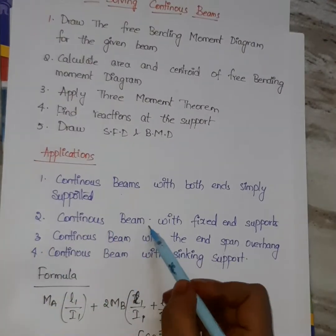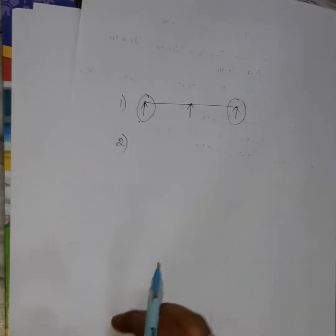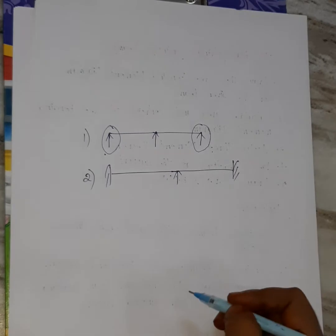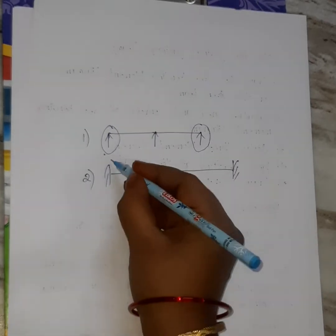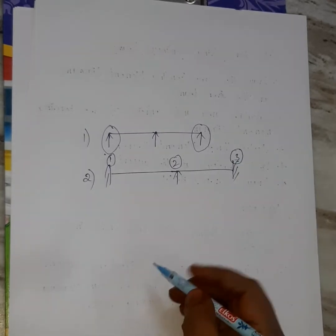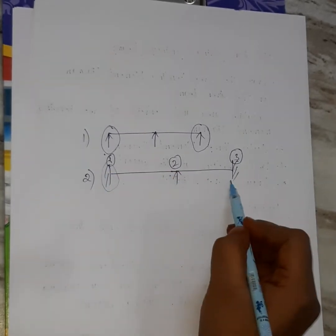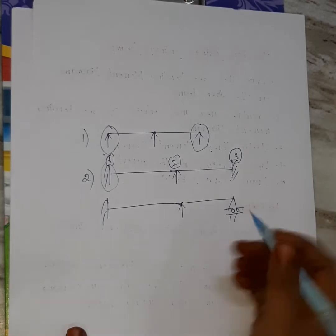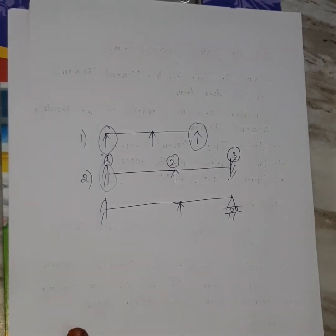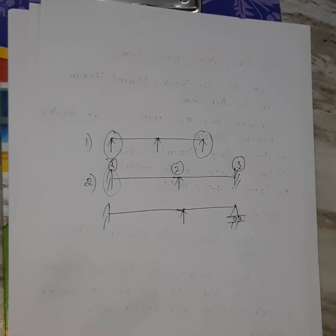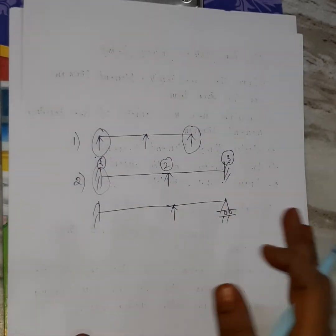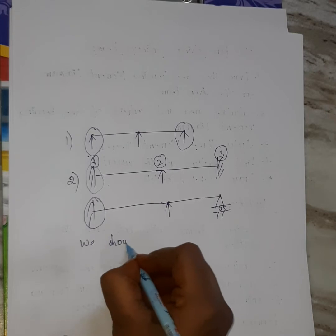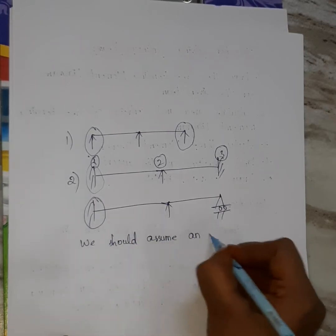The second application is a continuous beam with fixed end support. For example, this is also a continuous beam — it has one support, a second support, and a third support. This fixed support means both ends are fixed, or it could be a roller and hinge support combination. We use Clapeyron's theorem for these cases. When both ends are fixed, we should assume an imaginary span.